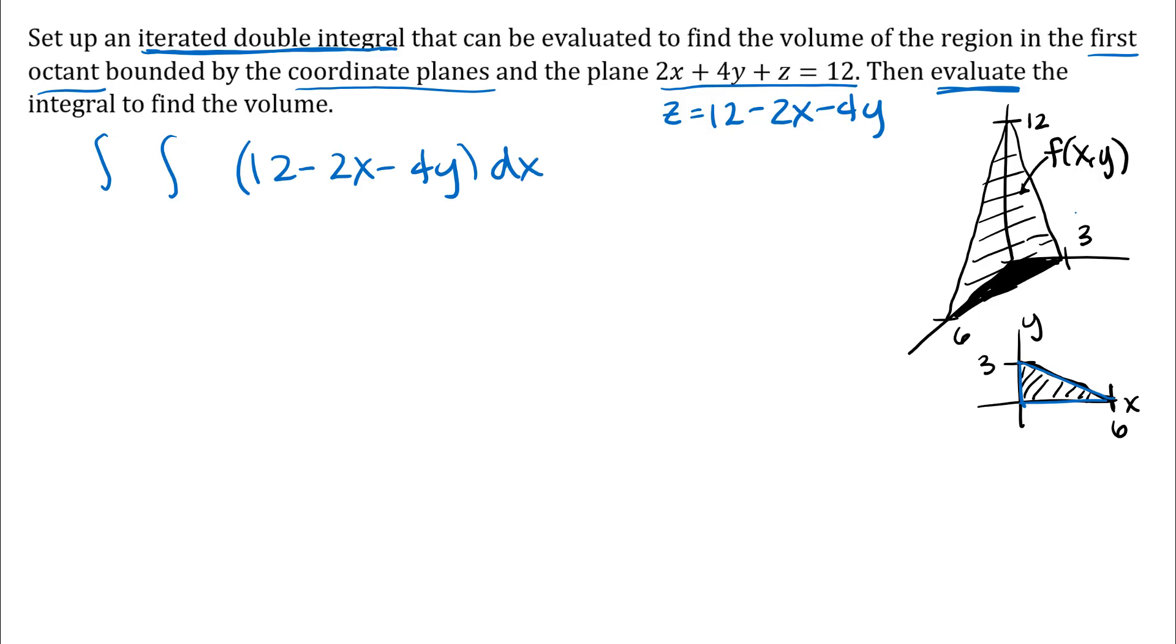If I set this up first with dx on the inner integral, think about going through our region in the direction of increasing x. I'm entering at x equals zero and leaving through the equation of that line. There are a couple ways to get the equation of that line. One is to look at your graph in the xy-plane. The other is to use the equation of our surface. That line is where the plane intersects the xy-plane. If I put in z equals zero, I get 2x plus 4y equals 12. I'll divide through by two.